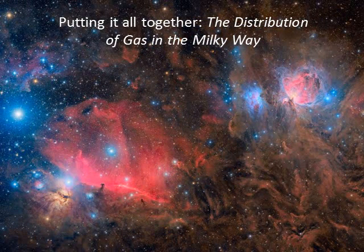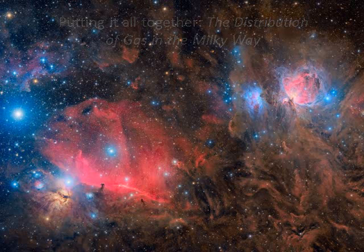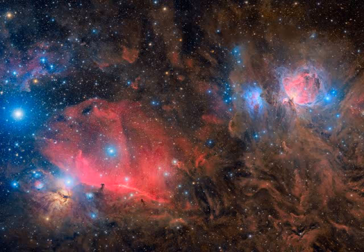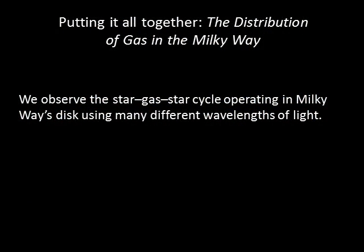Different regions of the galaxy are in different stages of the star-gas-star cycle. Because the cycle proceeds over such a long period of time, each stage appears to us as a snapshot. We therefore see the interstellar medium as a wide variety of manifestations, ranging from the tenuous million-degree gas bubbles to the cold, dense gas of molecular clouds. We can see how different states of gas are arranged in our galaxy by observing the galaxy in many different wavelengths.